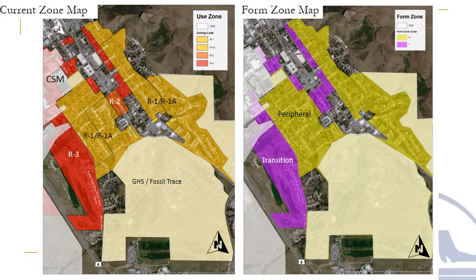Hello and welcome, central neighborhood residents, to the mapping feedback exercise for the zoning code rewrite. To make you aware of where we stand regarding the overall schedule of this project, we have completed the main components of the new form-based code. We've met with City Council several times to discuss the new code and are now in a position to take feedback on the mapping of our new form zone overlays, which requires feedback from you as a resident or property owner in this subject neighborhood.